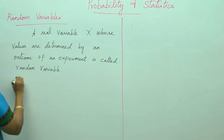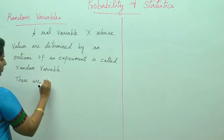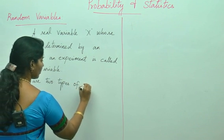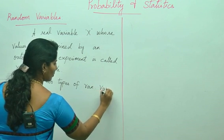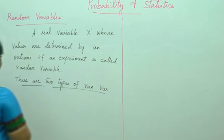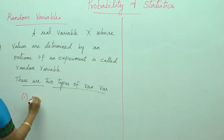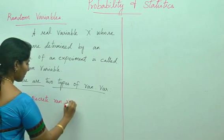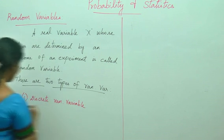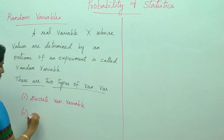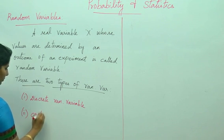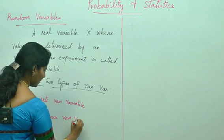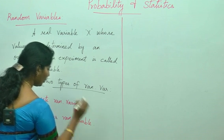There are two types of random variable: discrete random variable and continuous random variable.